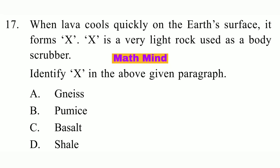Question No. 17. When lava cools quickly on the earth's surface, it forms X. X is a very light rock used as a body scrubber. Identify X in the above given paragraph. Option B is correct: Pumice.